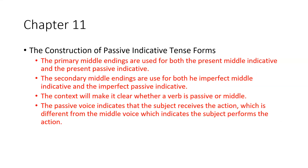The construction of passive indicative tense forms. The primary middle endings are used for both the present middle indicative and the present passive indicative. The secondary middle endings are used for both the imperfect middle indicative and the imperfect passive indicative. The context is going to make it clear whether the verb is passive or middle, because you could parse it either way unless you read the context.